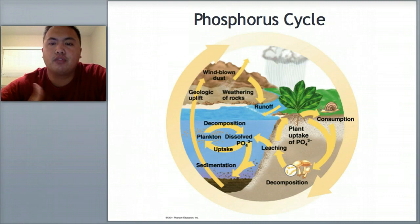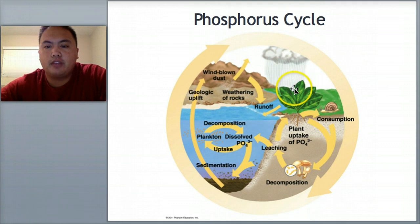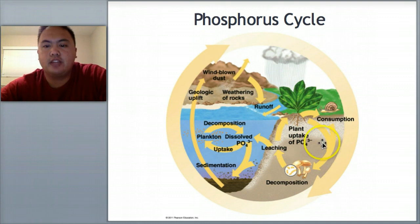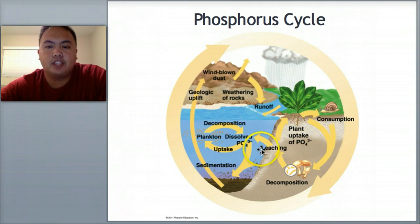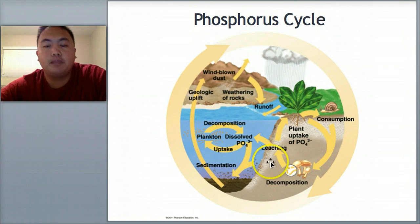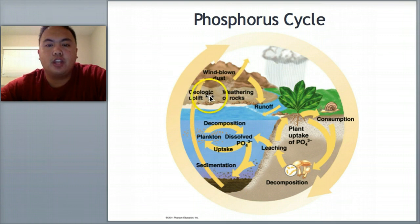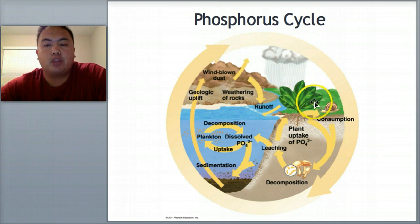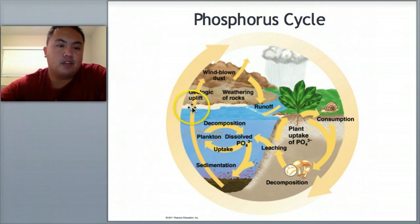The last cycle is the phosphorus cycle — think of rock. It's a simpler cycle because not much happens. A plant takes in phosphorus, dies, becomes phosphorus, and starts the process over. Sometimes phosphorus is not absorbed by plants and leaches into the water. Through plankton uptake and ocean cycling, that phosphorus can come back up via geologic uplift and become rock. That rock is then blown off as dust or erodes, runs off into the ground, and is used by plants again.